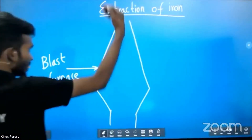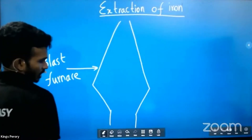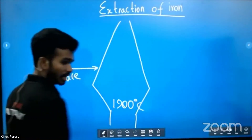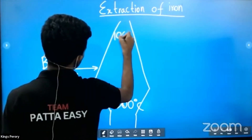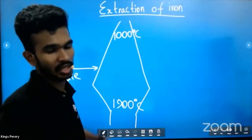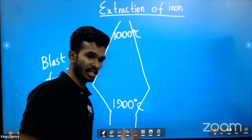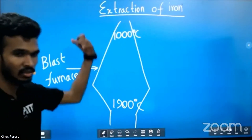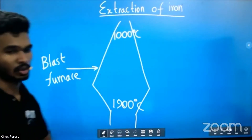Second point: what is the temperature range in a blast furnace? In a blast furnace, the temperature range is from 1900 degrees Celsius at the bottom to 1000 degrees Celsius at the top.